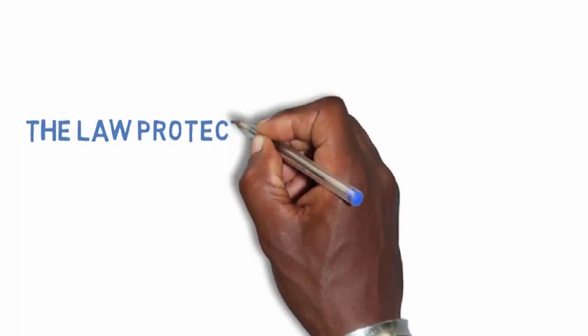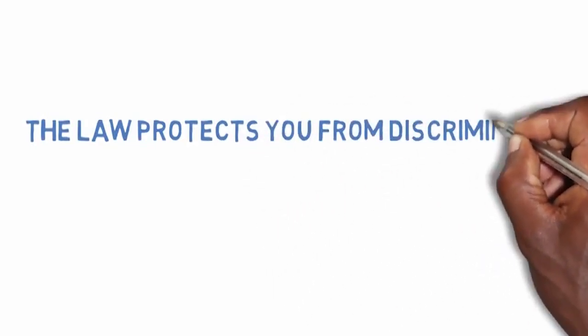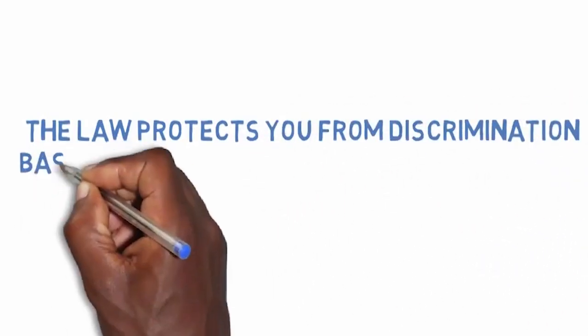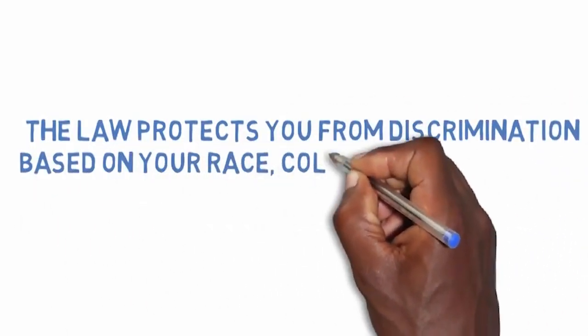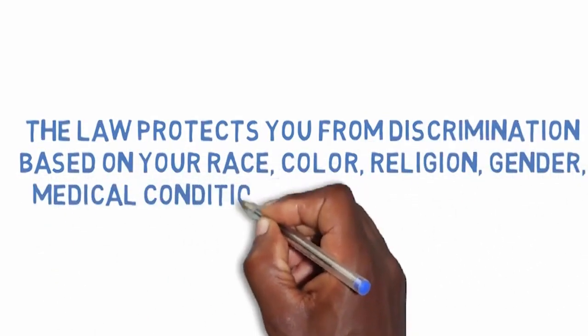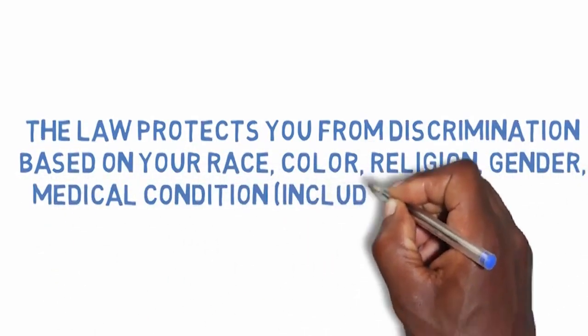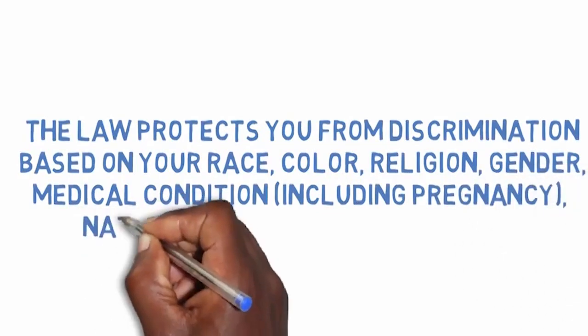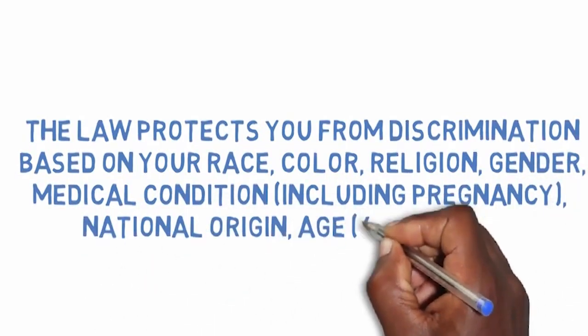Before we jump into the process, I want to give you some basic preliminary information. If you are a federal employee or a job applicant for a position with the federal government, the law protects you from discrimination based on your race, color, religion, gender, medical condition including pregnancy, national origin, age 40 or older.